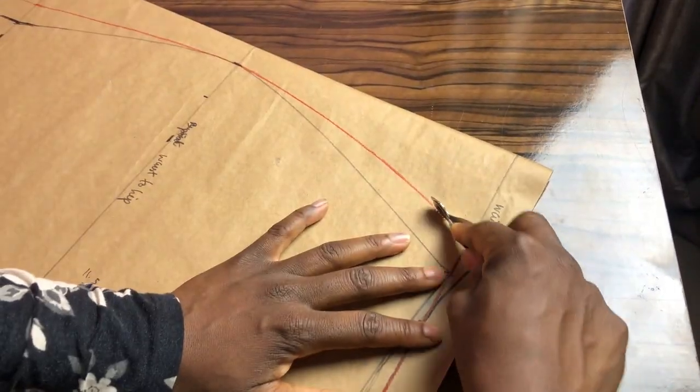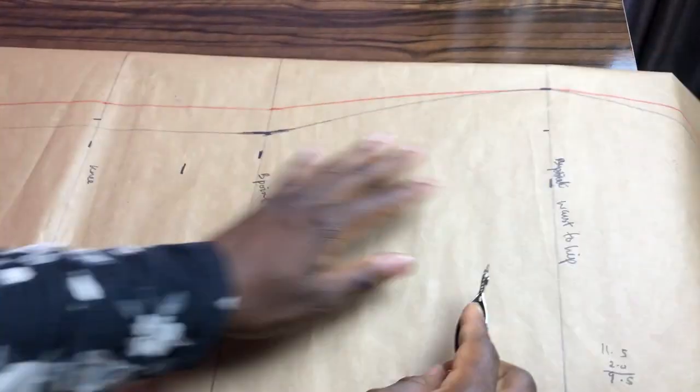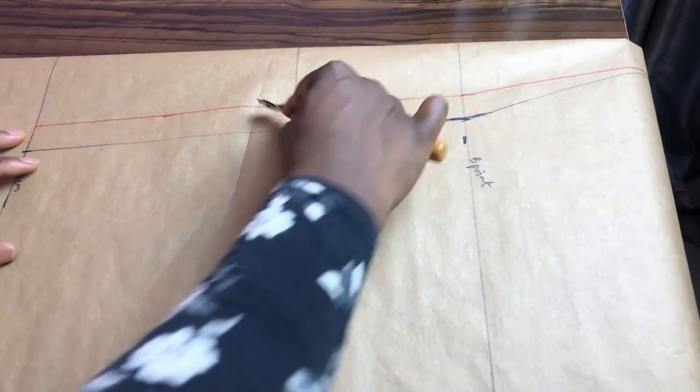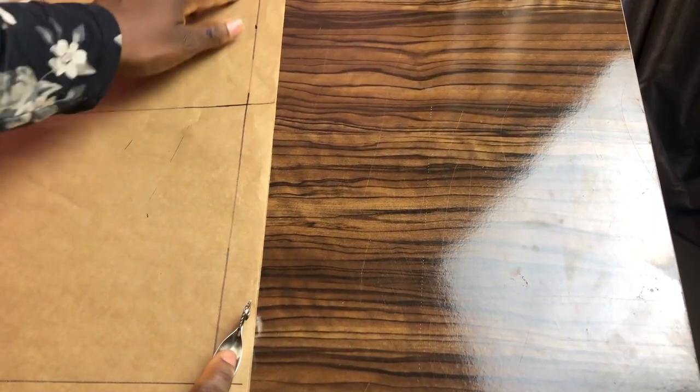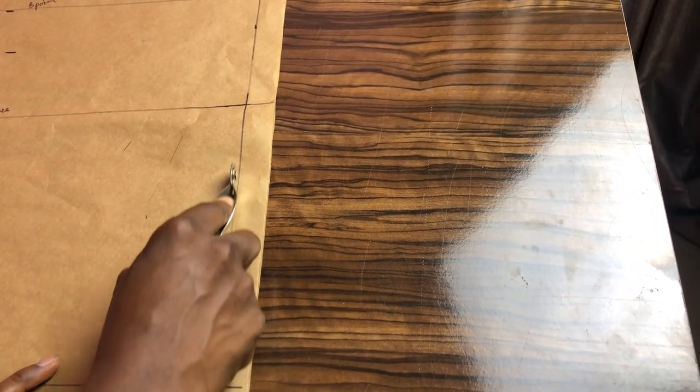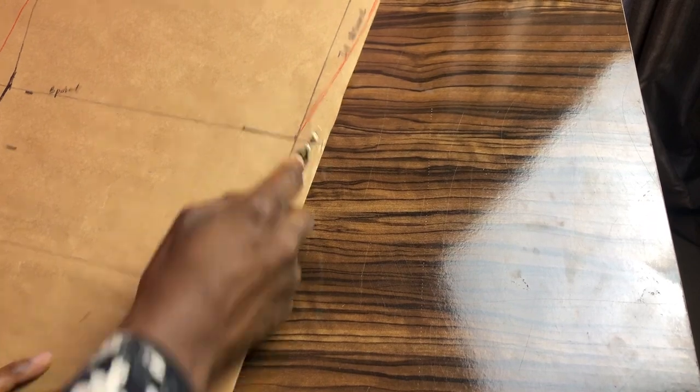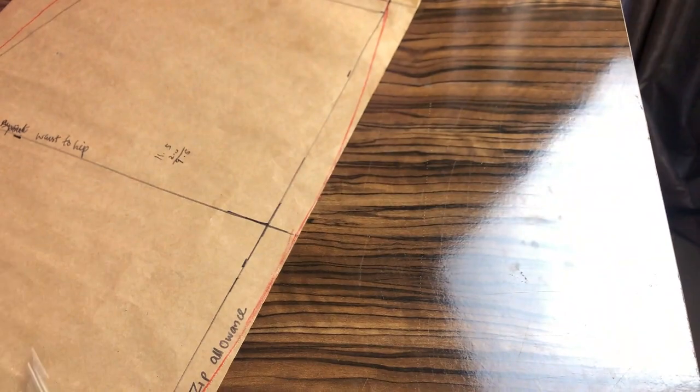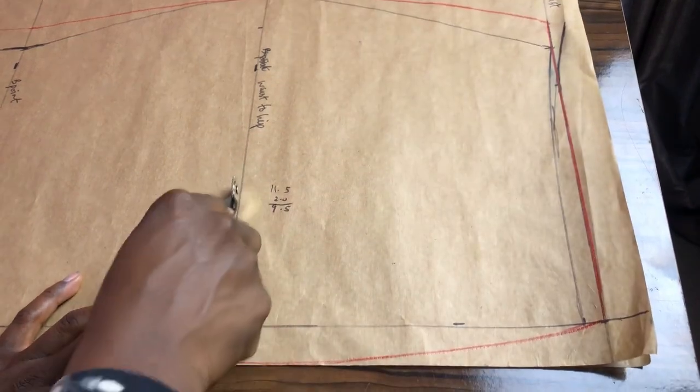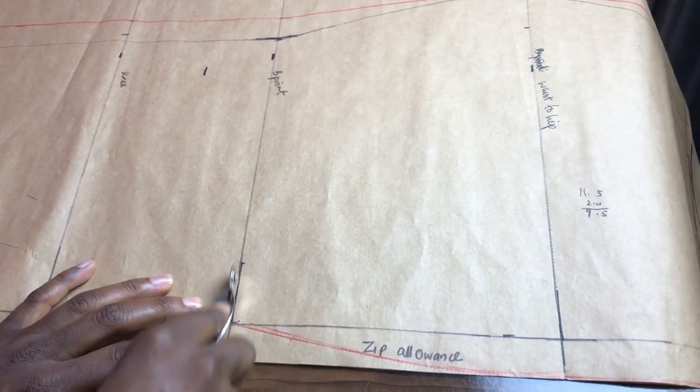For those drafting on paper, you can fold the paper this way if you have enough space, or trace on fresh paper. Remember that you don't need to trace the zip allowance here anymore. You can also trace all the horizontal measurements as this will help to locate the points when joining.